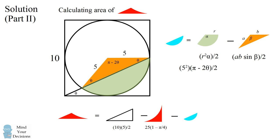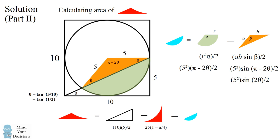We can now substitute these dimensions into our formulas. We can simplify sine of pi minus 2 theta, because sine of pi minus 2 theta equals sine of 2 theta — sine of pi minus any angle equals sine of that angle. Now we need to consider what angle theta is. In our original triangle, it has a height of 5 and a base of 10. So by trigonometry, the angle theta equals the inverse tangent of 5 over 10, which is the inverse tangent of 1/2. We substitute that in and simplify the formula for the area of the sector. For the area of the isosceles triangle, we use the double angle formula for sine of 2 theta and simplify.